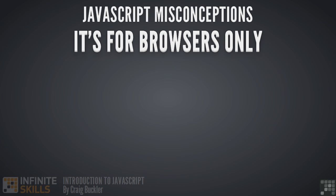A lot of people think that JavaScript is for browsers only, and that's not the case. You can use it on the server, as we've seen with Node.js. ActionScript used in Flash is based on JavaScript. PDF files can have JavaScript embedded in them. Desktop widgets on Microsoft Windows and Apple's Mac OS also use JavaScript. OpenOffice provides JavaScript support. HP's WebOS applications are written in JavaScript. And in Windows 8, JavaScript is a first-class programming language — you can write desktop applications using it.